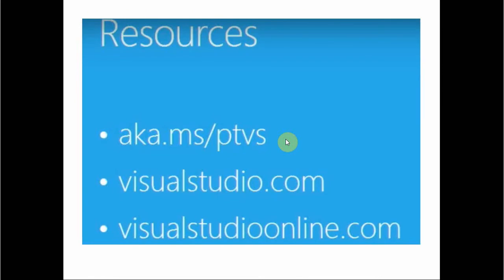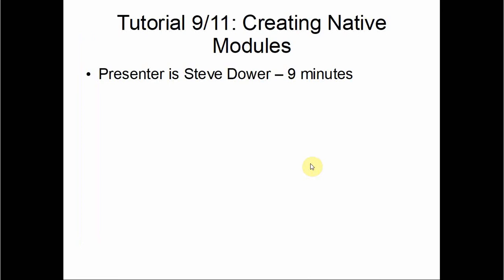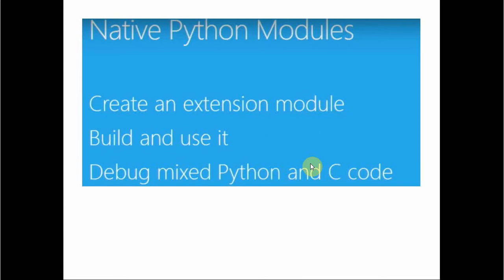Here are resources for Python Tools for Visual Studio, Visual Studio, and Visual Studio Online. Tutorial nine out of eleven is creating native modules — this is adding a C++ module to Python, covered by Steve Dower in nine minutes. We're going to create an extension module in C++ to run a tanh function that will run five times faster than it does in Python. We'll build it, use it, and debug the Python and C++ code mixture.